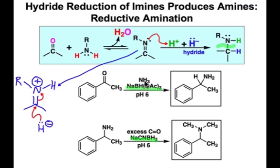In the first example, our amine is ammonia, and the carbonyl derivative is the ketone acetophenone. We're going to make the imine across this carbon-oxygen double bond, and that's going to get reduced to make the new amine shown here.